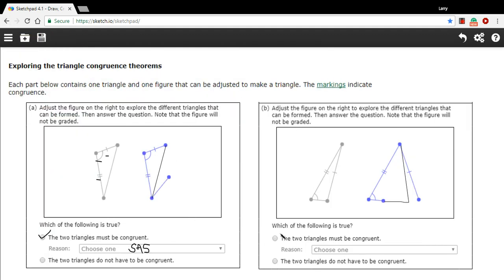So what we would do here is just check the two triangles do not have to be congruent. That's a little bit of work with how to play with this construction of triangles to explore triangle congruence.